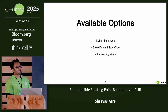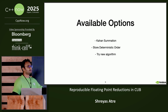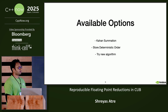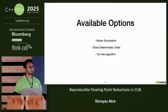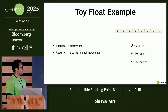So if at all we want bitwise reproducible results, what do we do? Some people might say Kahan summation, but that's not really deterministic — it's just better precision. The other solution could be storing the deterministic order, but that's really not feasible. So we try a new algorithm.